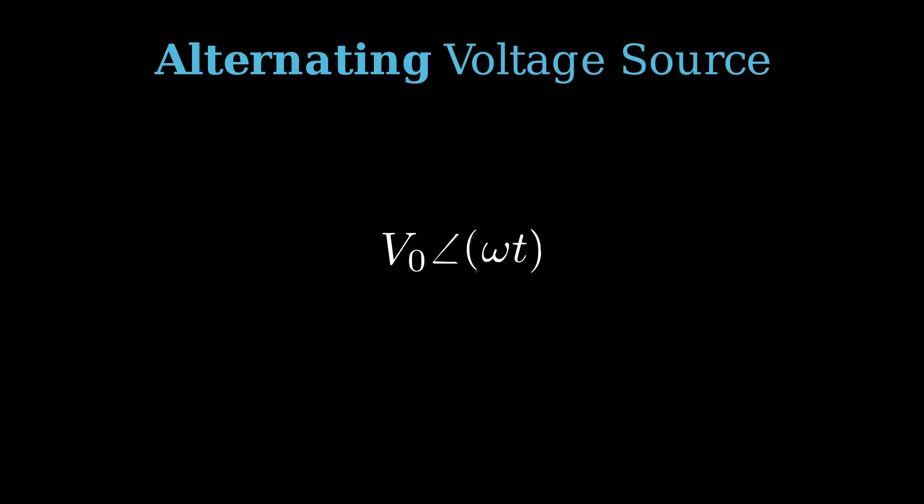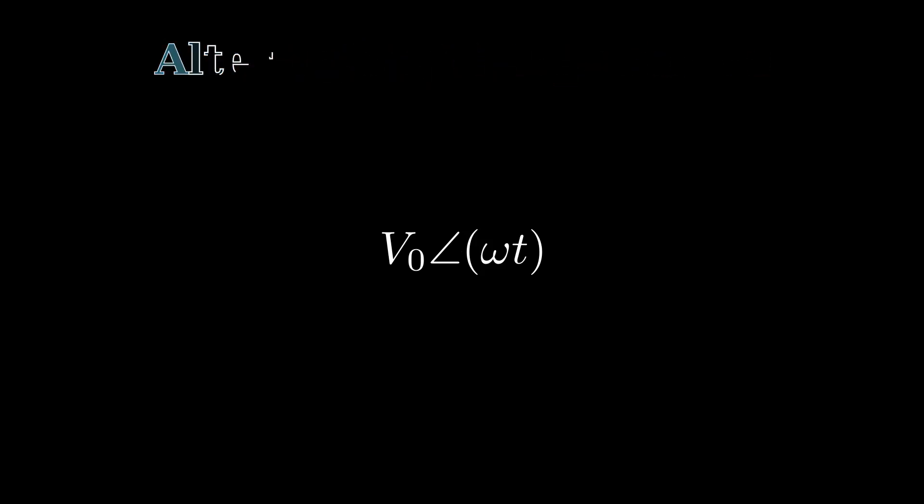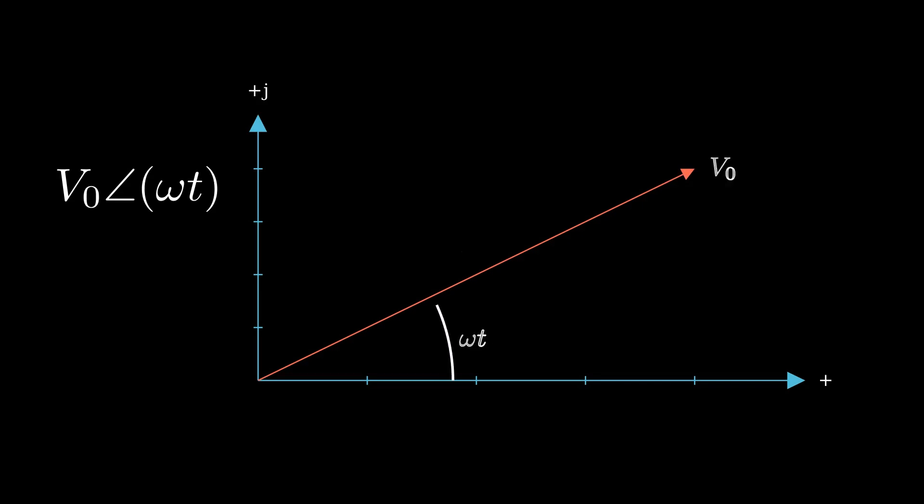Condensing the expression for our AC voltage source further, we can create another graph to show the real-life application of our first graph. We then have our angle omega theta, the max value of V which is V0, and its respective projections on the real and imaginary axes.